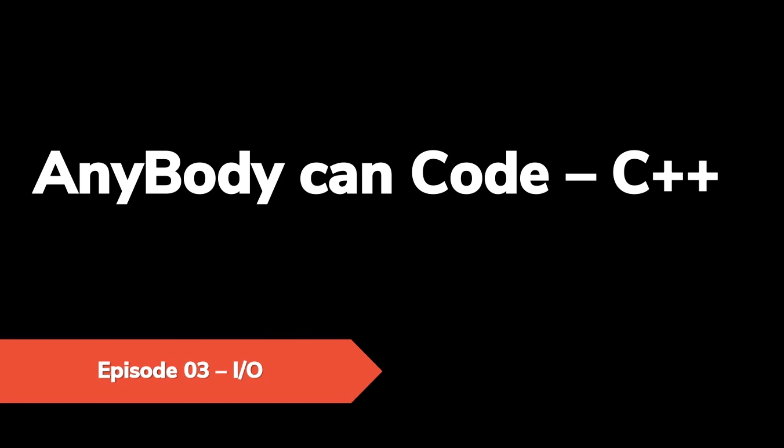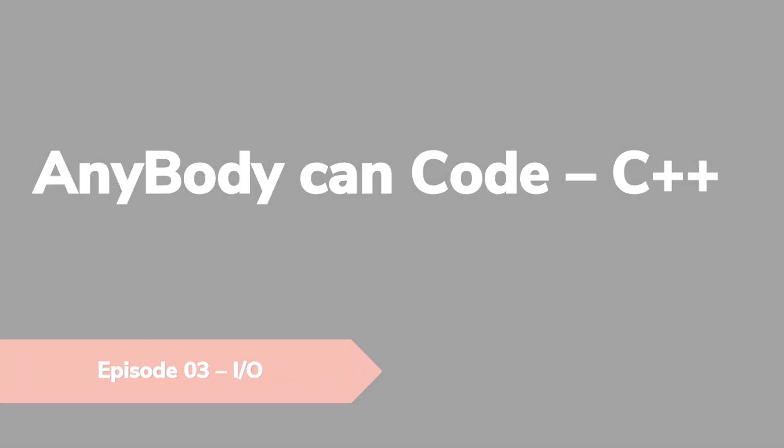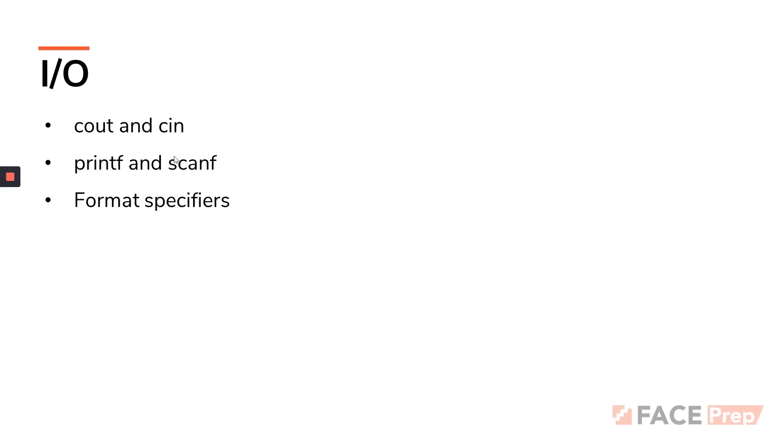In the last video, we covered data types in detail — everything required for C++. Today I'll be explaining inputs and outputs: how to take inputs from the user and how to display them as output. For today's video, we'll be looking at Cout, Cin, printf, scanf, and certain format specifiers.